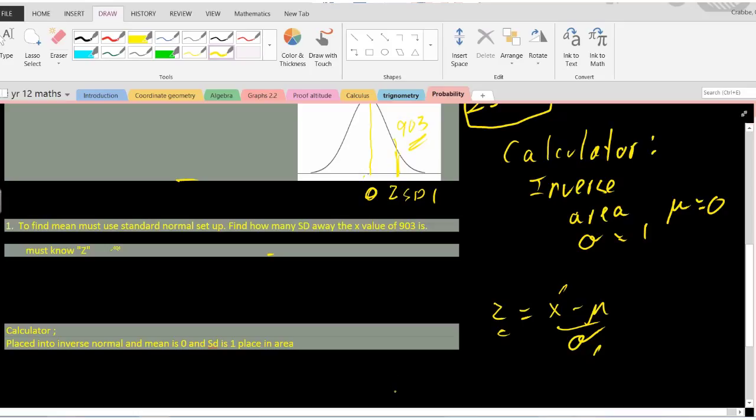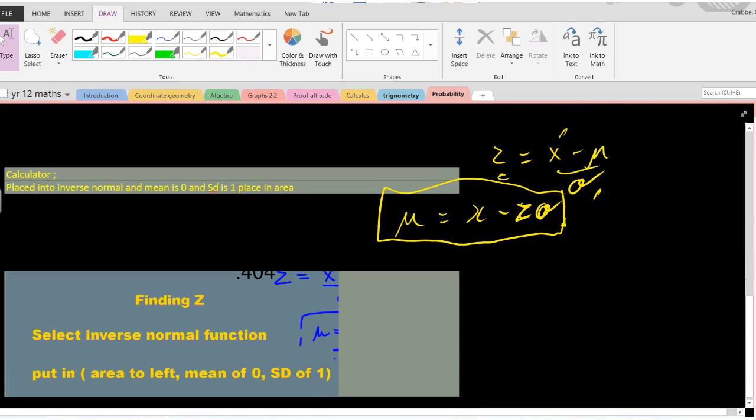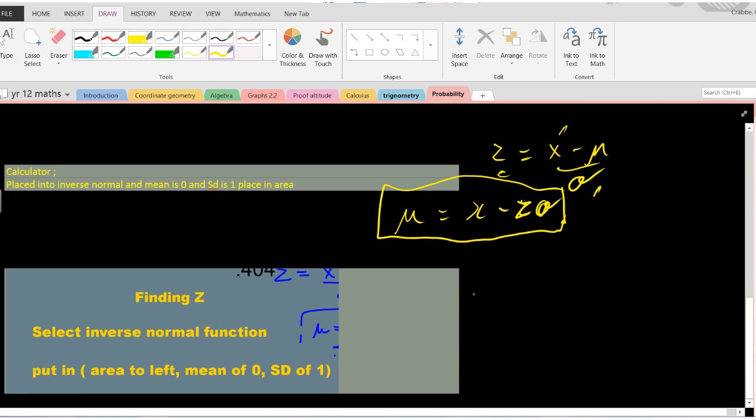If you rearrange this, you're going to end up getting x minus z times the standard deviation equals the mean. If we plug in all the values, we know x is 903 minus z which is 0.404 times the standard deviation.